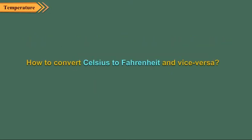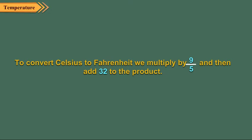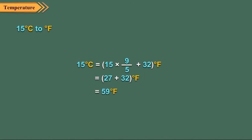Now let us discuss how to convert Celsius to Fahrenheit and vice versa. To convert Celsius to Fahrenheit, we multiply by 9 upon 5 and then add 32 to the product. For example, to convert 15 degrees Celsius to degree Fahrenheit, we first multiply 15 by 9 upon 5 to get 27. To 27, we add 32 to get the required temperature as 59 degrees Fahrenheit.